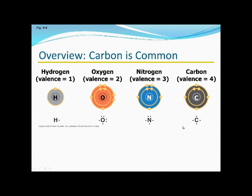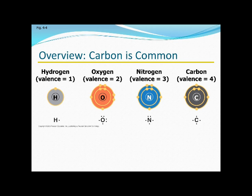Carbon is actually one of the key elements found in biological systems. Here we have four of those key elements: hydrogen, oxygen, nitrogen, and carbon, but also phosphorus and sulfur, which are very commonly found in proteins and genetic materials such as DNA and RNA. I want you to notice that carbon here actually has four valence electrons, or four vacancies in the valence shell.